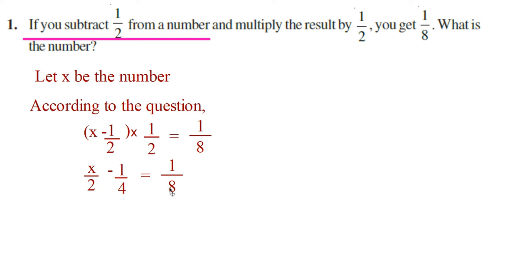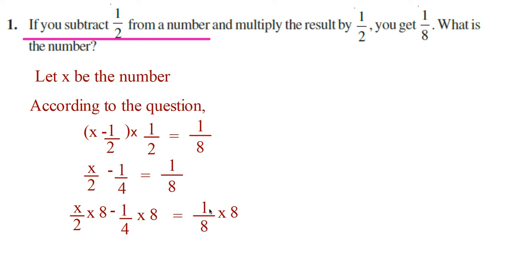Here the denominators are 2, 4, and 8. So you have to multiply all terms by 8 to remove these denominators. Multiplying by 8: x/2 times 8 minus 1/4 times 8 is equal to 1/8 times 8. Cancel 2 and 8 in the first term, 4 and 8.